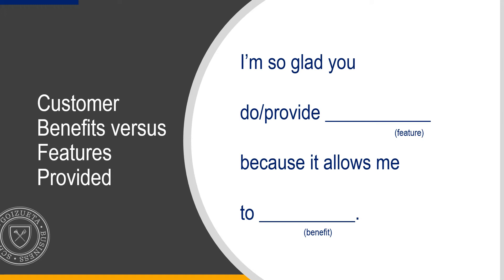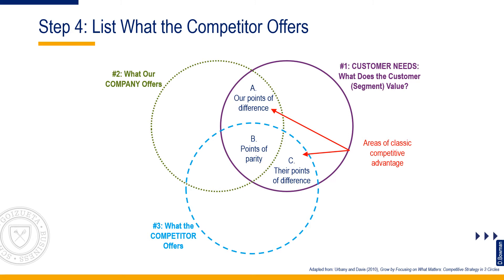Step 4: As you list out your sources of value, do not limit yourself to the features or aspects of your product or service. It is best to write out what you are helping the customer accomplish — that is, why a feature might be important. Put yourself in the customer's shoes and answer: 'I am so glad you provide [feature] because it lets me [benefit].'